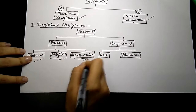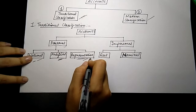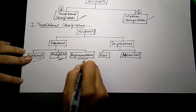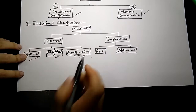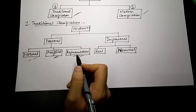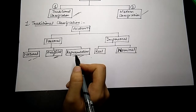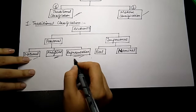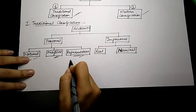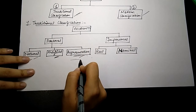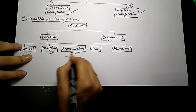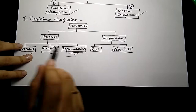Now what is a representative account? A representative account is one which represents a certain person or a group of persons. Suppose I have made an outstanding rent account — I have to pay the rent to my landlord, so this outstanding rent account is representing our landlord. This will be considered as a representative personal account.